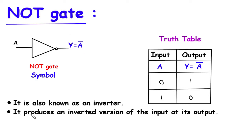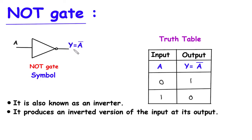It produces an inverted version of the input at its output. So when the input is low, the output is high. And when the input is high, the output is low.